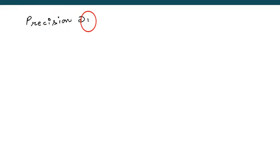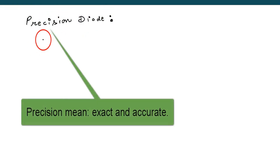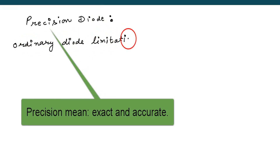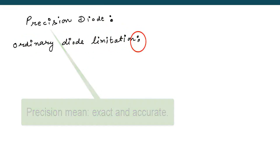Our today's topic is Precision Diode. Precise means very exact, very accurate.